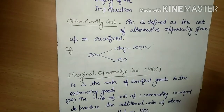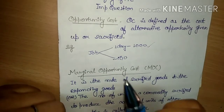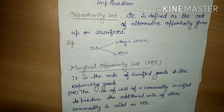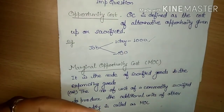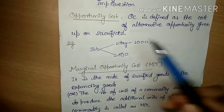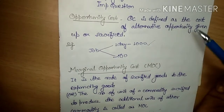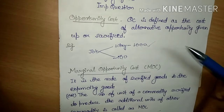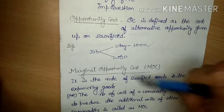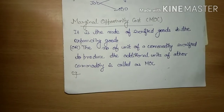Matlab koi bhi do cheezein mein — jo bhi opportunity cost hai, hope clear hoga. Toh bahut easy hai. Jo bhi cost, wahi likha: it is defined as the cost of alternative opportunity given up and sacrificed. Toh jo alternative opportunity hai jo aapne doosre ko sacrifice ki, jaise isको sacrifice kiya — toh isko hum log opportunity cost kehte hain. Toh next topic hai Marginal Opportunity Cost.